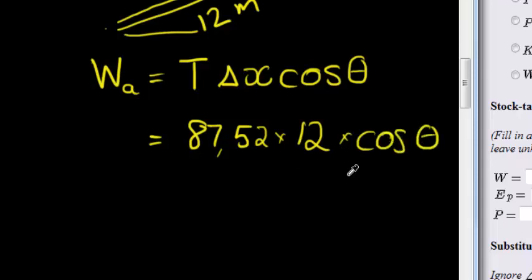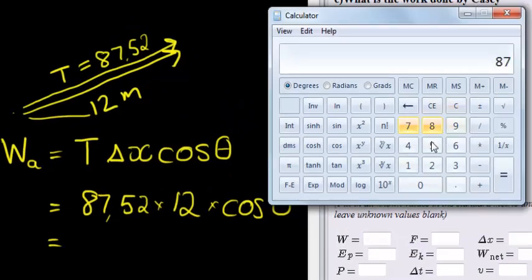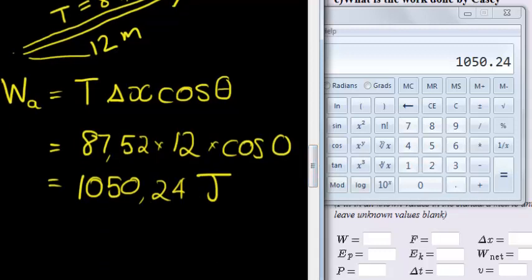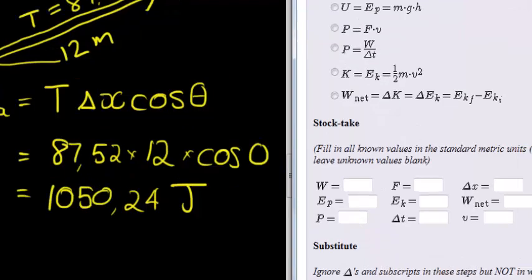That's 87.52 times 12 times cosine of theta, which is zero. Cosine of zero is always one, so I could have left it out. This equals 1050.24 joules. I got it right.